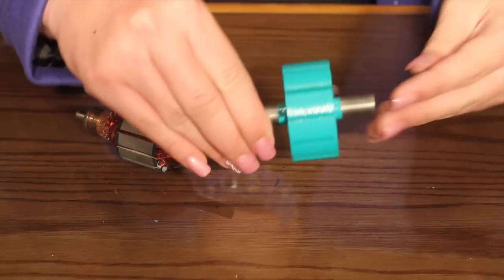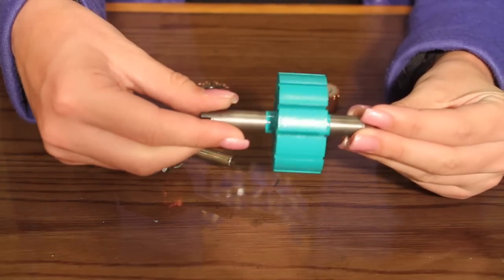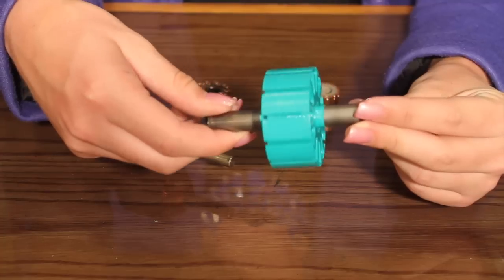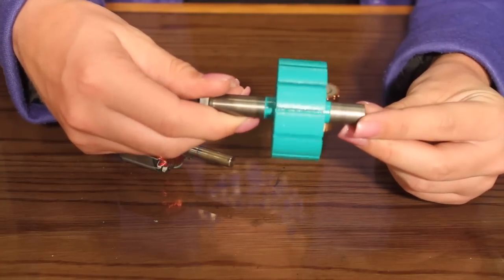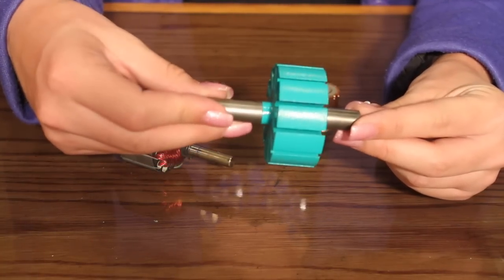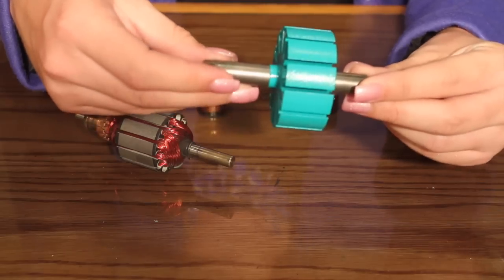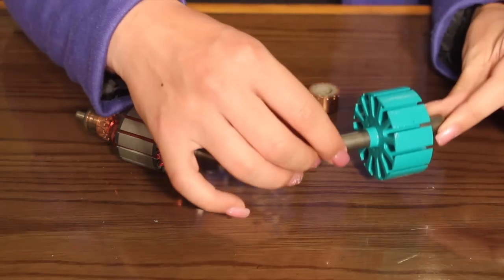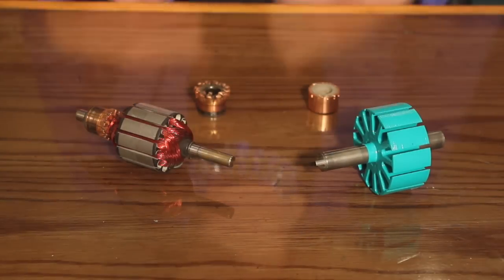This armature has been completely stripped and is ready to be rewound. The green plastic-looking material here is actually an epoxy powder coating insulation that better insulates the armature core than when it was new. We will now rewind the armature and install the new commutator.